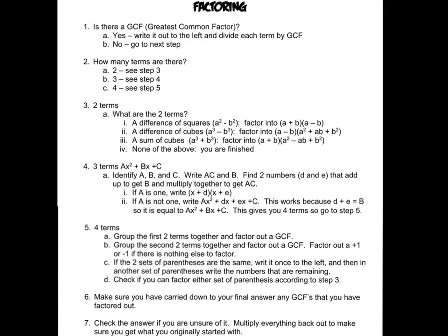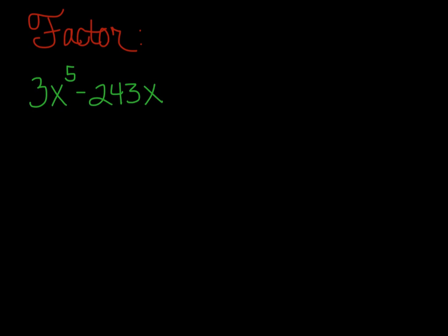This is the factoring handout that I'm referring to. All right, so for some example problems, let's factor 3x to the 5th minus 243x. Remember, the very first thing we're going to do is factor out a greatest common factor. In this case, that will be 3x.